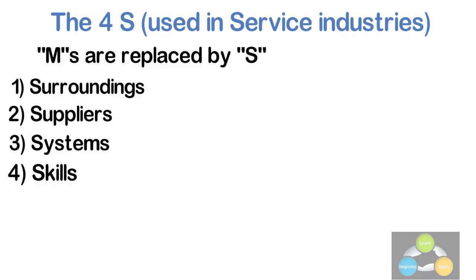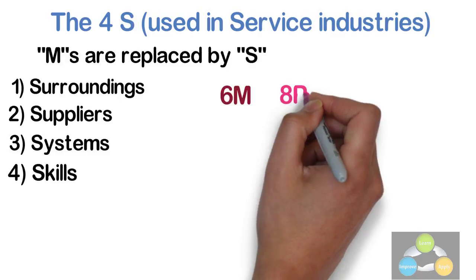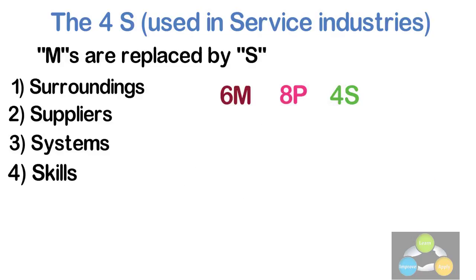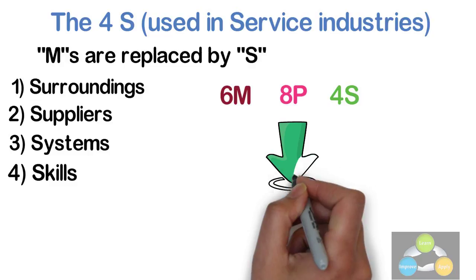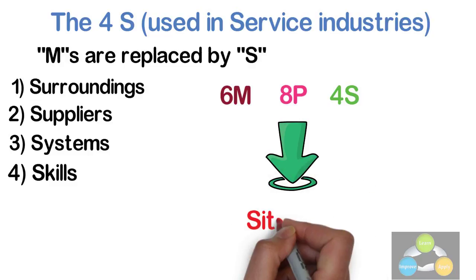Remaining procedure for fishbone diagram will remain same as that of the manufacturing example. You can use multiple combinations of above categories to find the root cause depending on the situation and the area of problem.